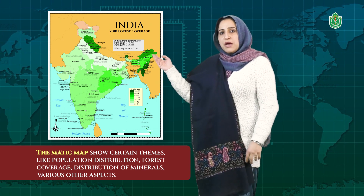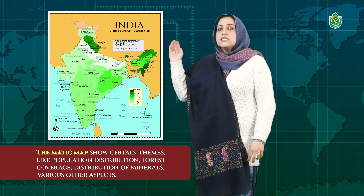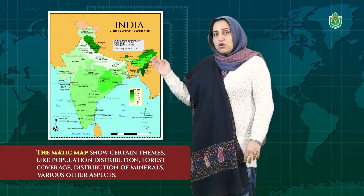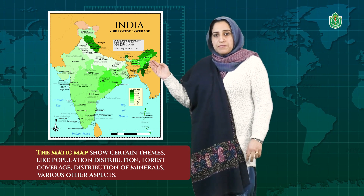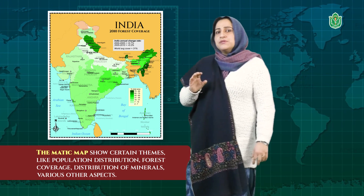Another type is a thematic map, which shows various themes like population distribution, forest cover, and distribution of minerals. For example, this map shows the forest cover of India. All these maps are of great purpose and great use.